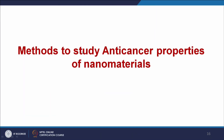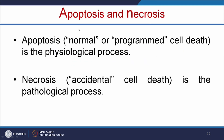Now we look at various methods to study the anticancer properties of nanomaterials. Before studying anticancer properties, we need to understand two types of cell death: apoptosis and necrosis. Apoptosis is a normal or programmed cell death—a physiological process. Necrosis is accidental cell death—a pathological process. Apoptosis is analogous to normal death, and necrosis to accidental death.